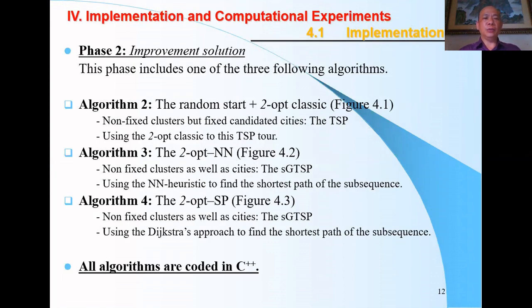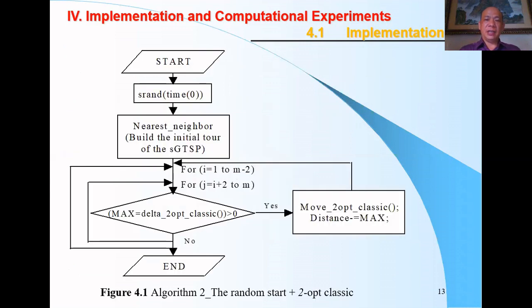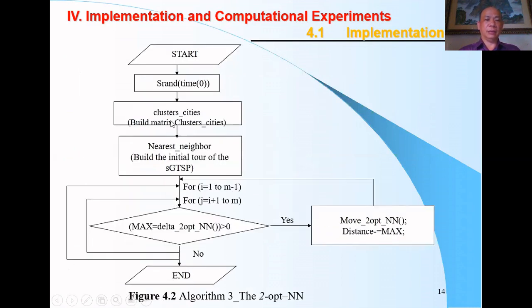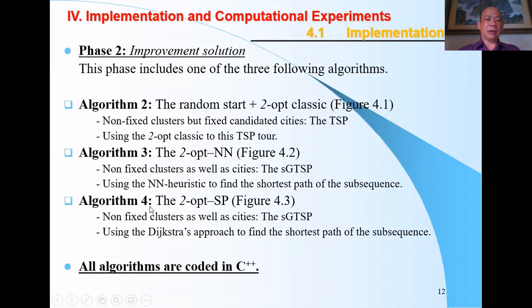In phase two, improvement solution, this phase includes three following algorithms. Algorithm 2: we combine the 2-opt classic with random start. We call it the algorithm in Figure 4.1 here. Use the random start with the 2-opt classic. Algorithm 3: we combine the 2-opt classic with the nearest neighbor in Figure 4.2. And the last algorithm, Algorithm 4, we combine the 2-opt classic with shortest path problem using the Dijkstra algorithm in Figure 4.3.